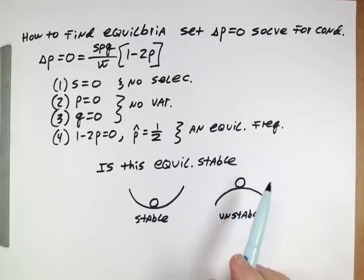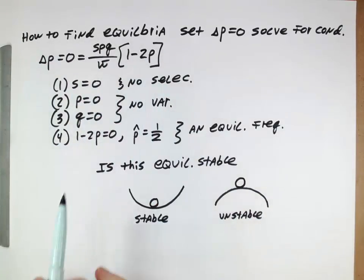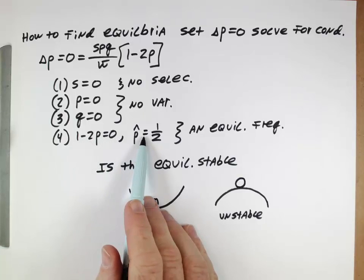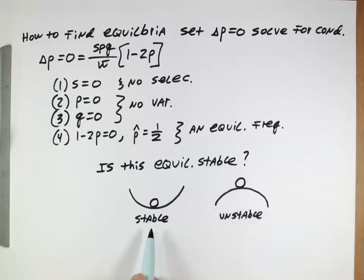So our next question we'll be looking at is when we have equations like this and we solve for our equilibria, and in particular our case of overdominance, this equilibrium frequency that we've derived here, is it a stable equilibrium or is it an unstable equilibrium? And we'll look at that next.